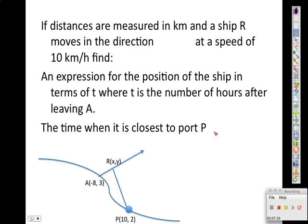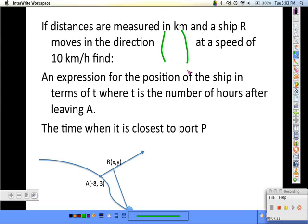The direction that I left off here is it's moving in a direction of (3, 4) and it's moving at a speed of 10 kilometers per hour. We want to write an expression for the position of the ship where t is the number of hours after leaving point A. So the point that it starts at is (-8, 3) plus t times (3, 4).